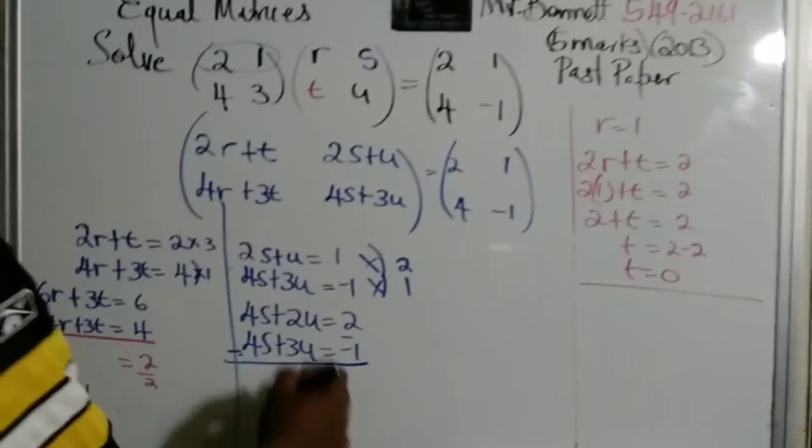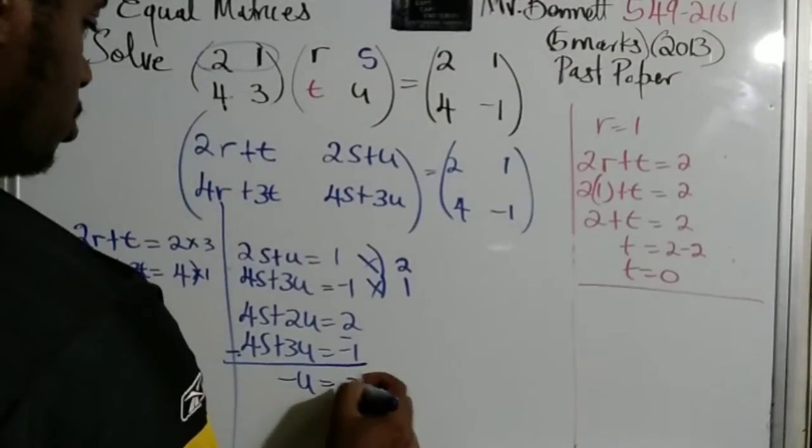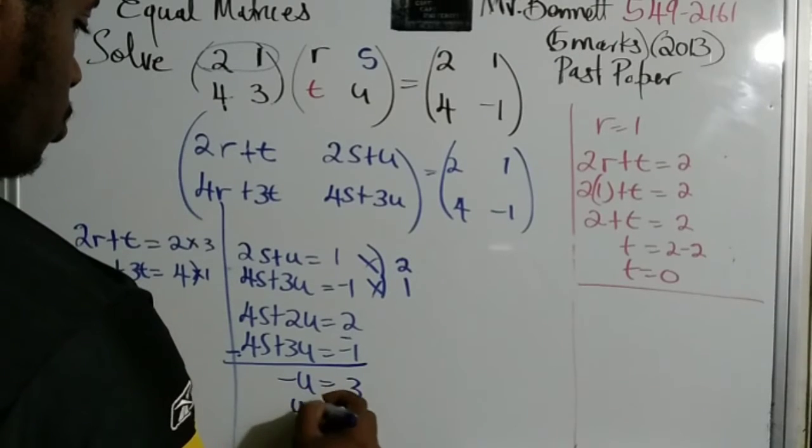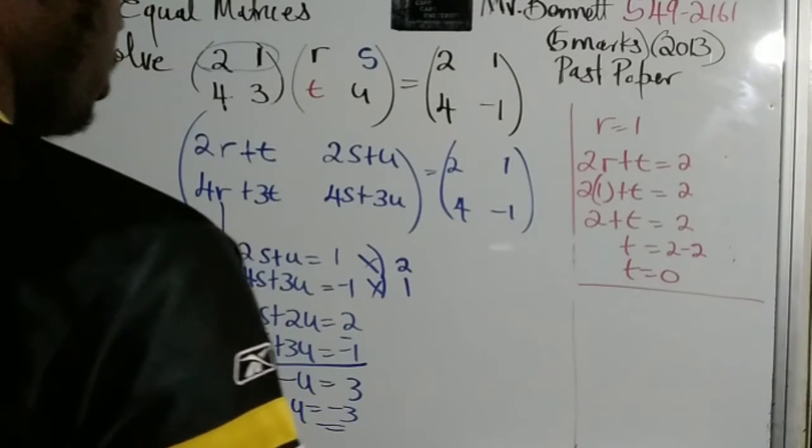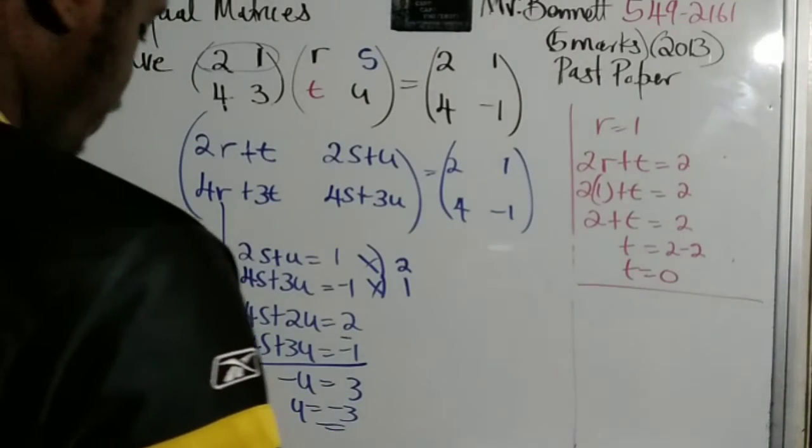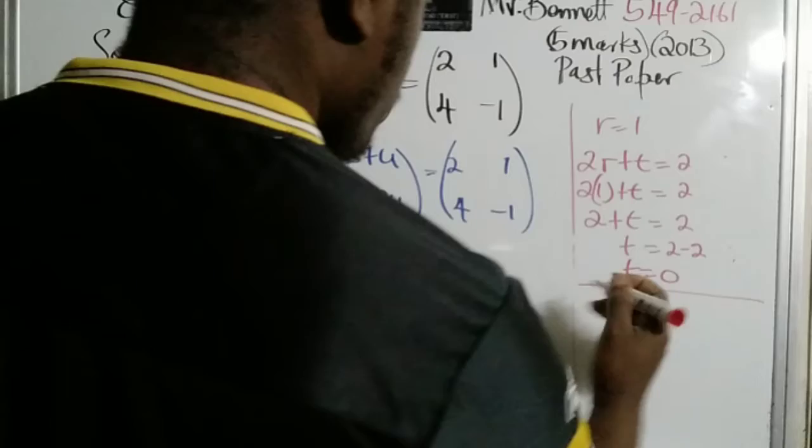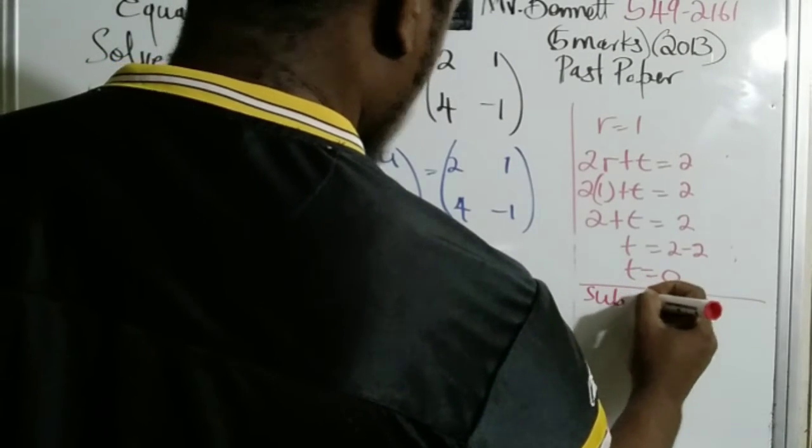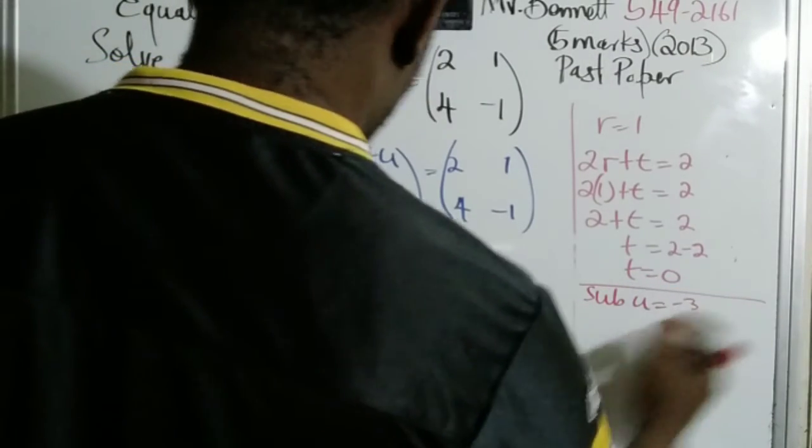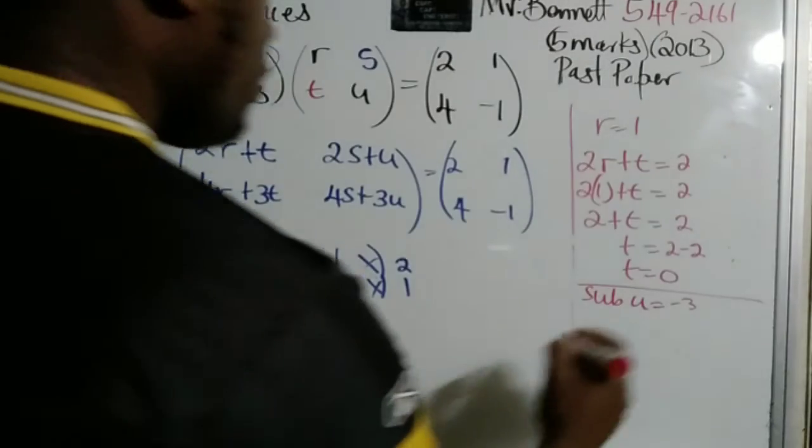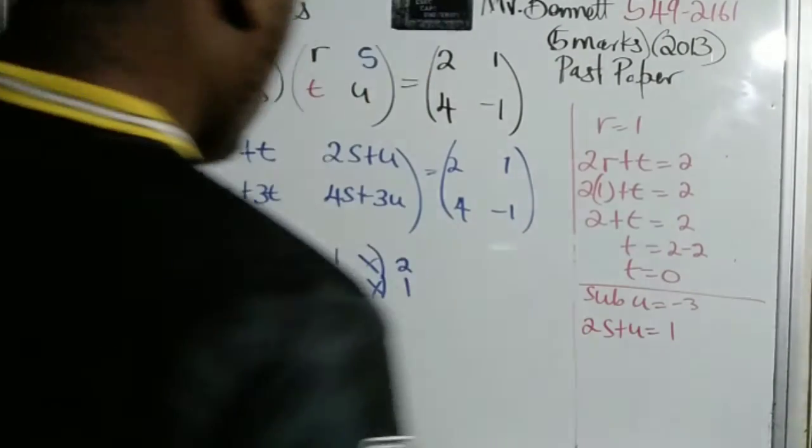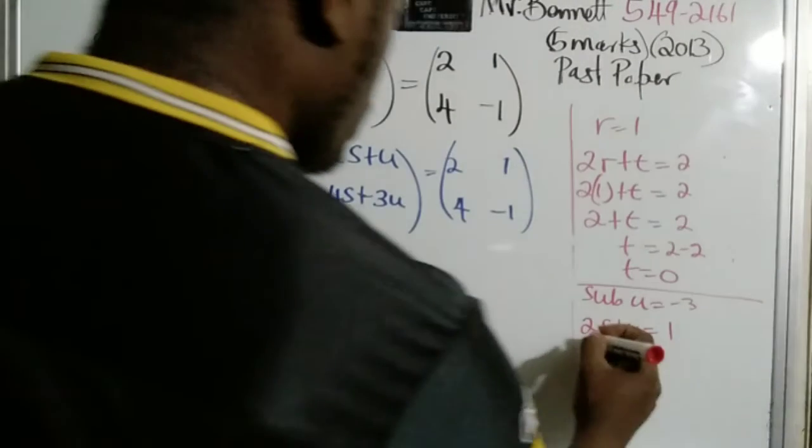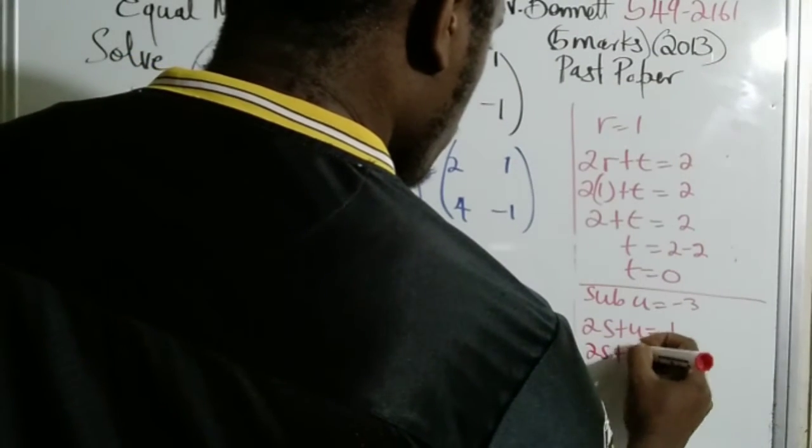So therefore, we get a positive. So this is negative 3. So therefore, U is equal to negative 3. So now that we know that U is negative 3, we can substitute. Substitute U equal minus 3 in an equation. Let me check this. Because 2S plus U is equal to 1. We know that U is negative 3. So anywhere we see U, we're going to put negative 3.